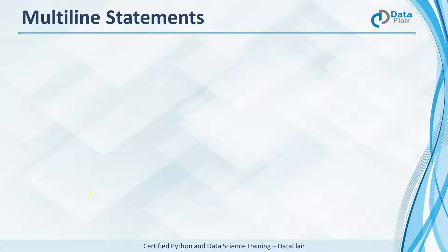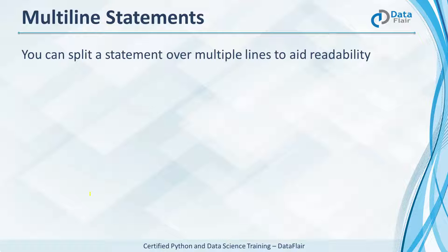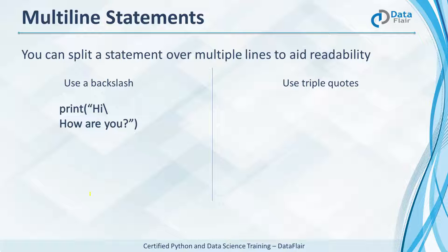On to multi-line statements. You can split a statement over multiple lines — one reason is to help with readability if you have a very long statement. To do this, you can use a backslash. For example, you can put a backslash after 'Hi' in a print statement. If you want to declare a variable 'a' with value 10 and then print it, you can use backslashes. We don't put a backslash after 10 because 'print a' is a separate statement, not part of 'a equals 10.'